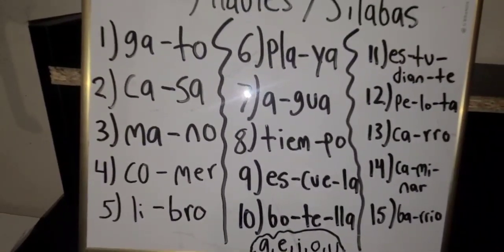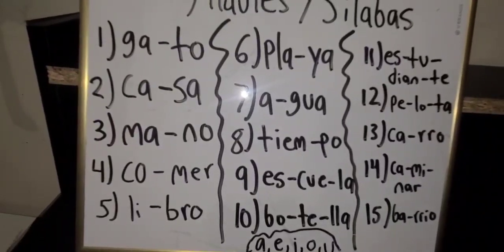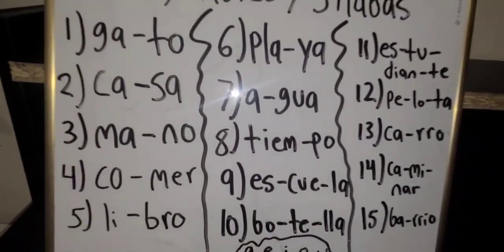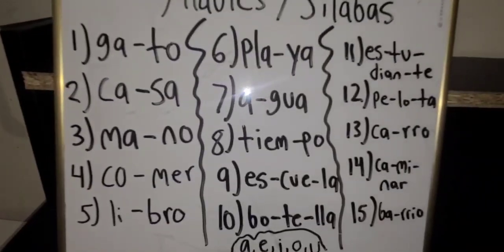So every word is made up of one or more syllables. Every word has at least one or more syllables.